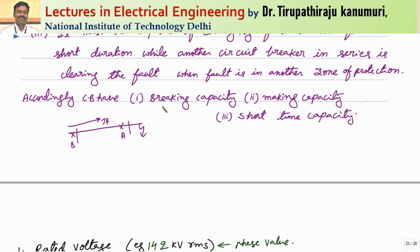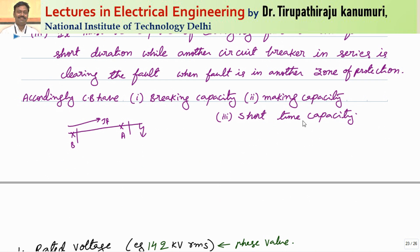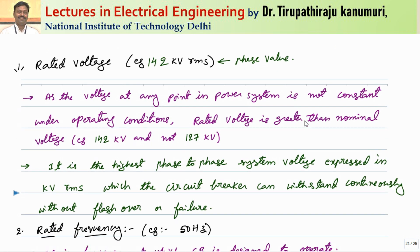Accordingly, the circuit breaker ratings are: breaking capacity, making capacity, and short time capacity. Now let us look at the nameplate details of a circuit breaker. The first is the rated voltage, which is always mentioned as a phase value. For a 220 kV line, the per-phase value is roughly 127 kV, but the rated voltage will be greater than that — for example, it may be mentioned as 142 kV. It is always the RMS value.